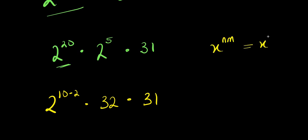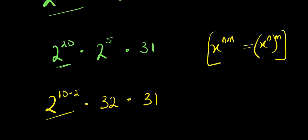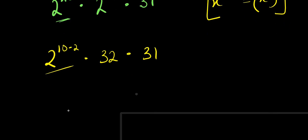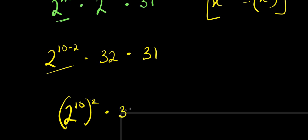Applying that rule here, I express 2^25 as 2^10 raised to the power of 2, times 32 times 31. So we need to find the value of 2 to the power 10.